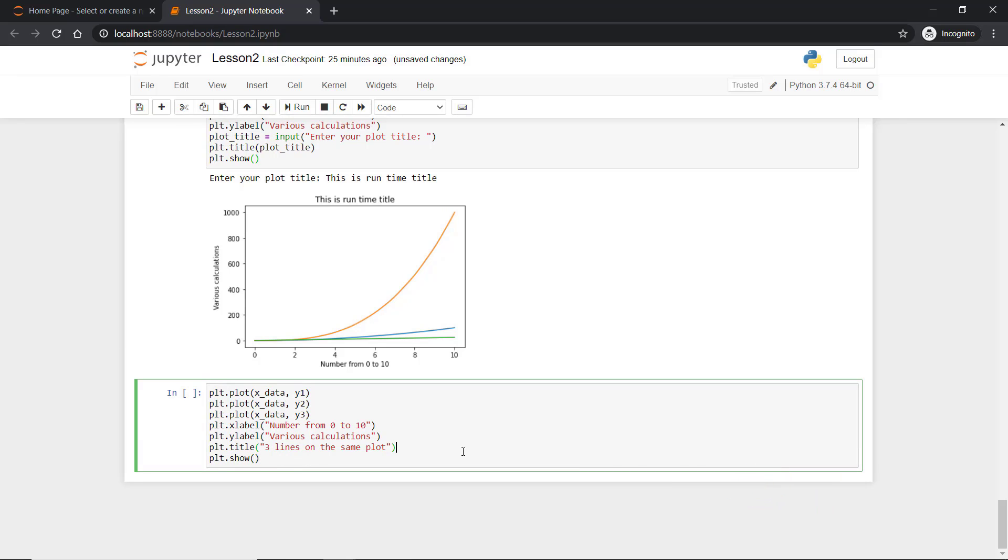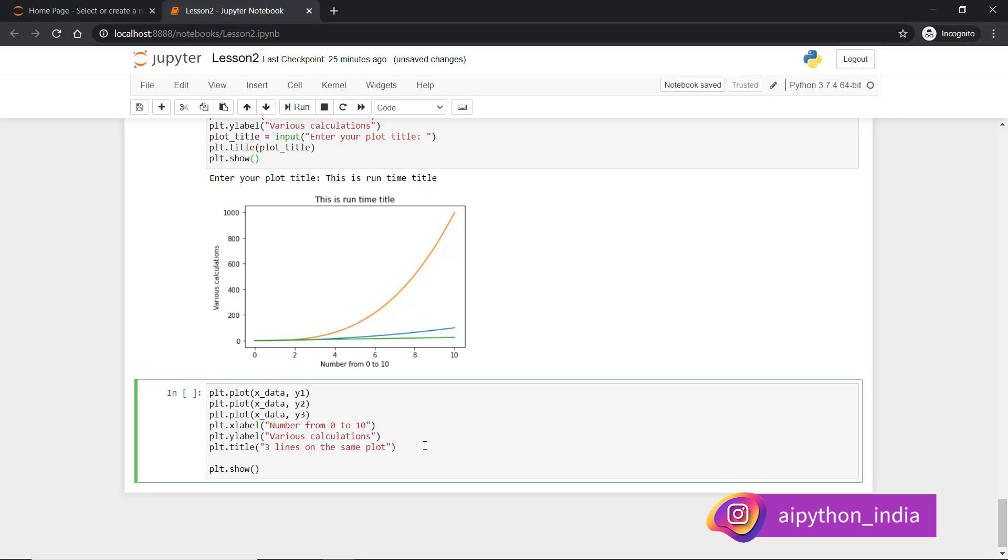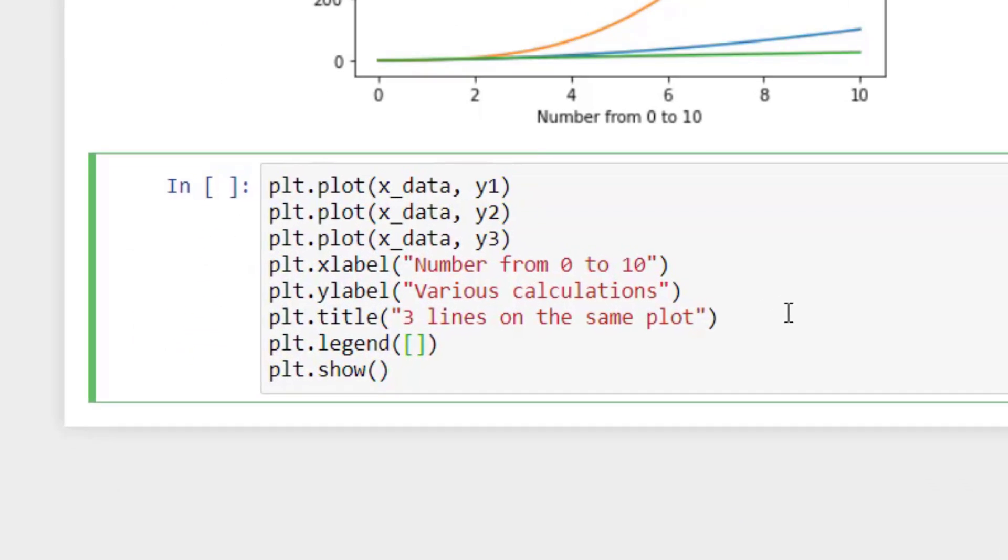Now we have x label, y label and title. Now we wanted to put the legends for these three data. So first way is, directly call legend function. So plt.legend and then this legend should be passed in list.